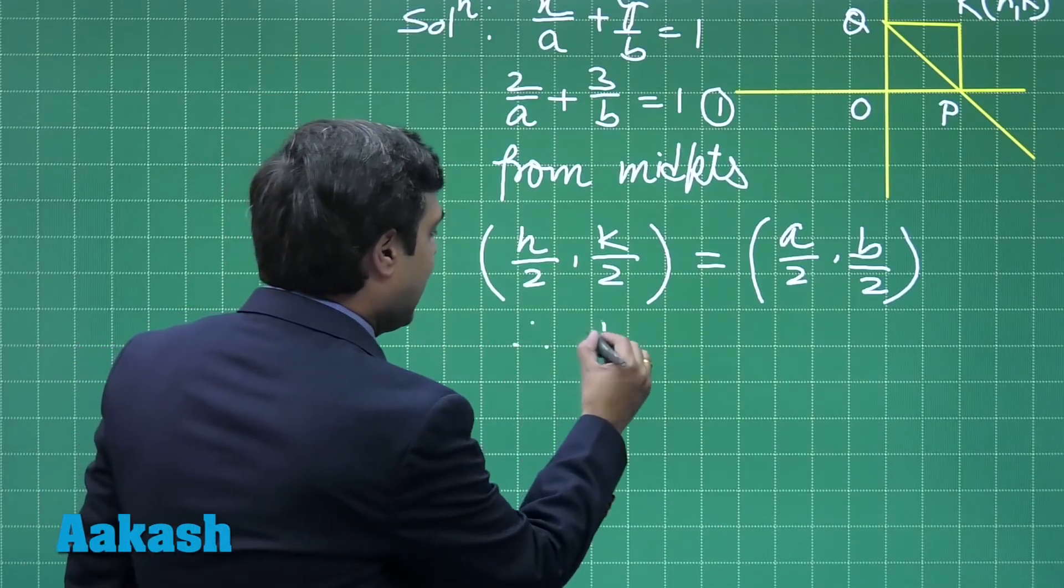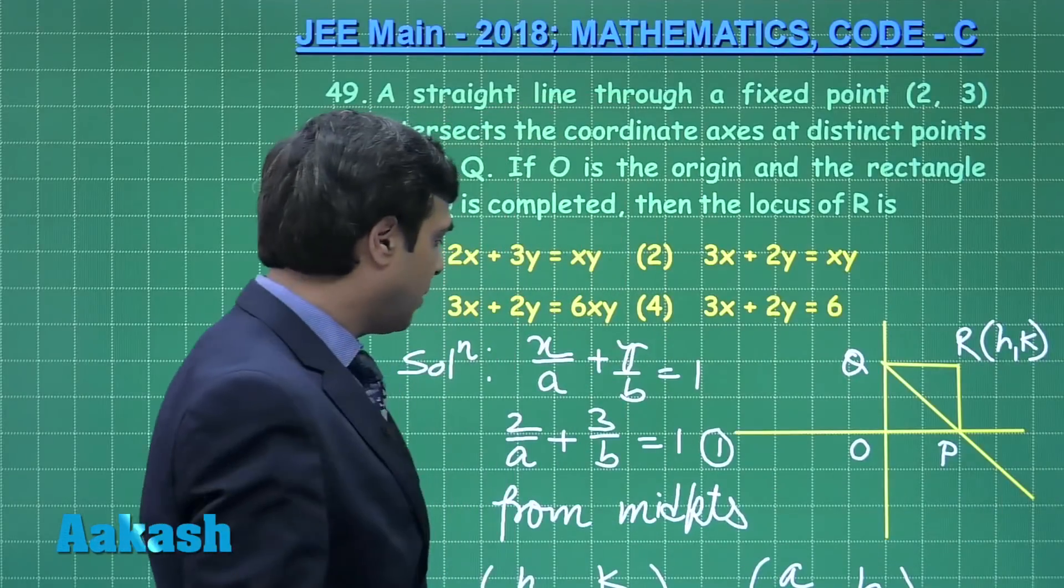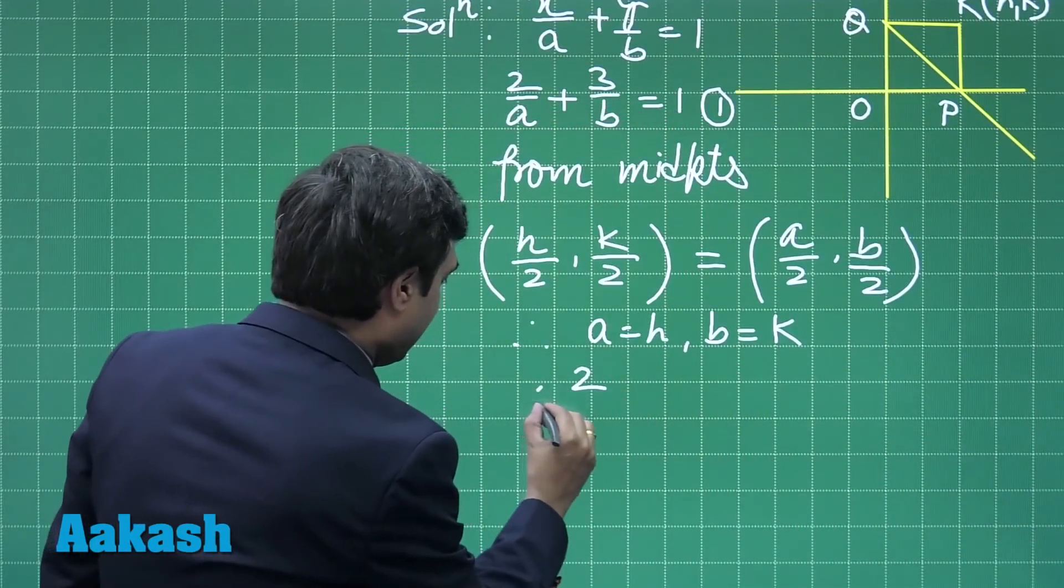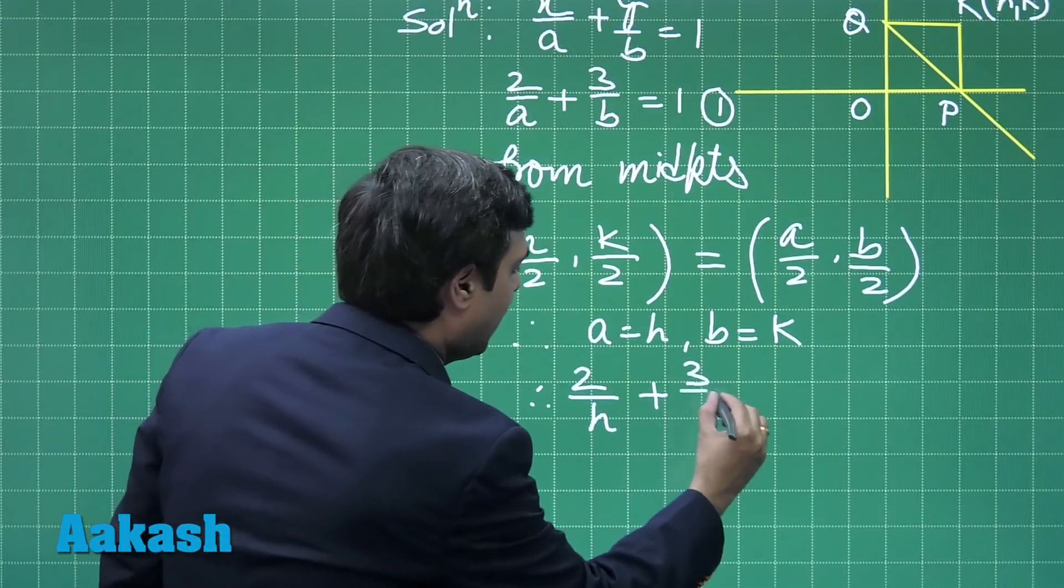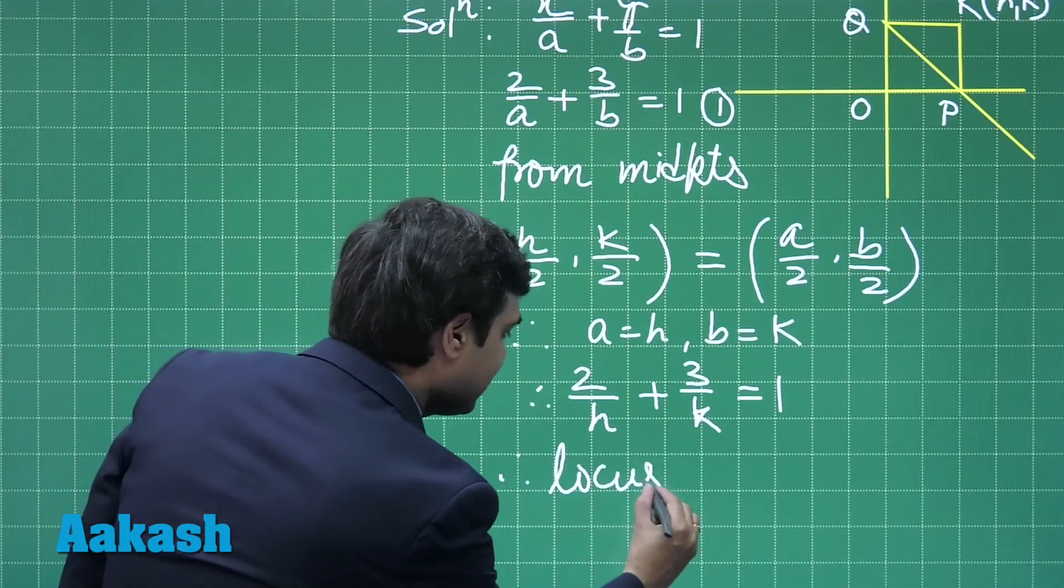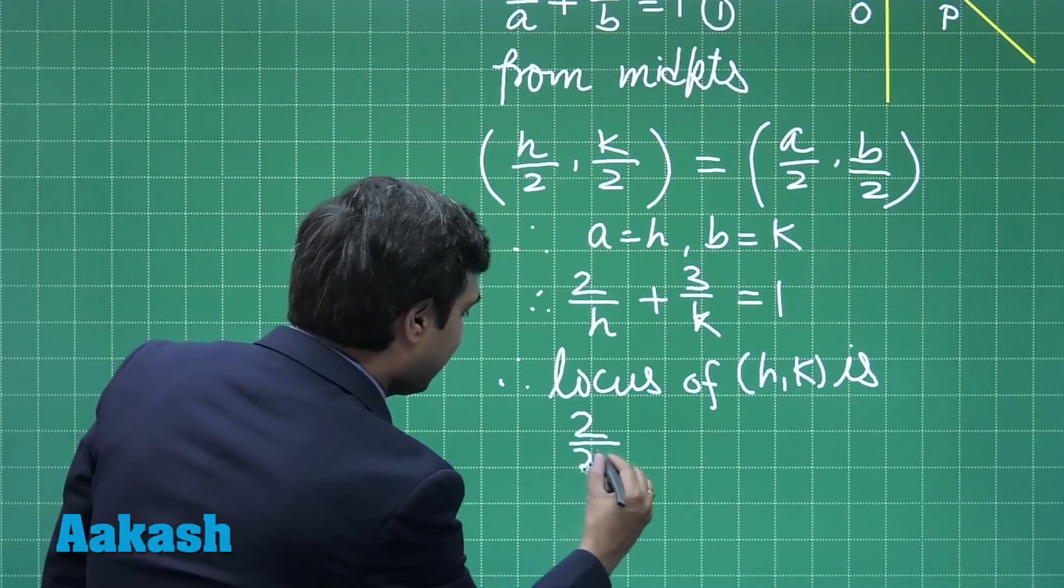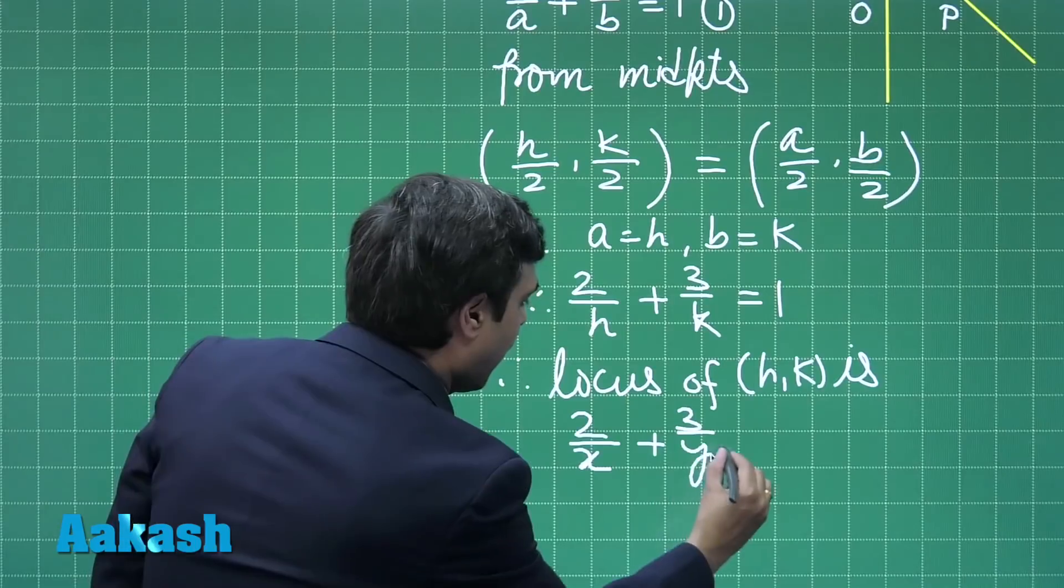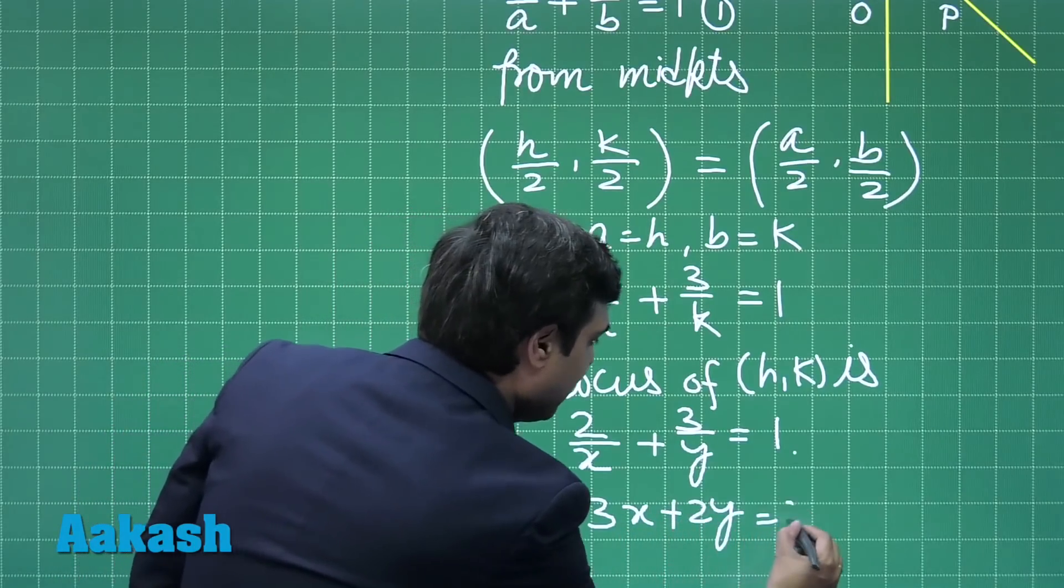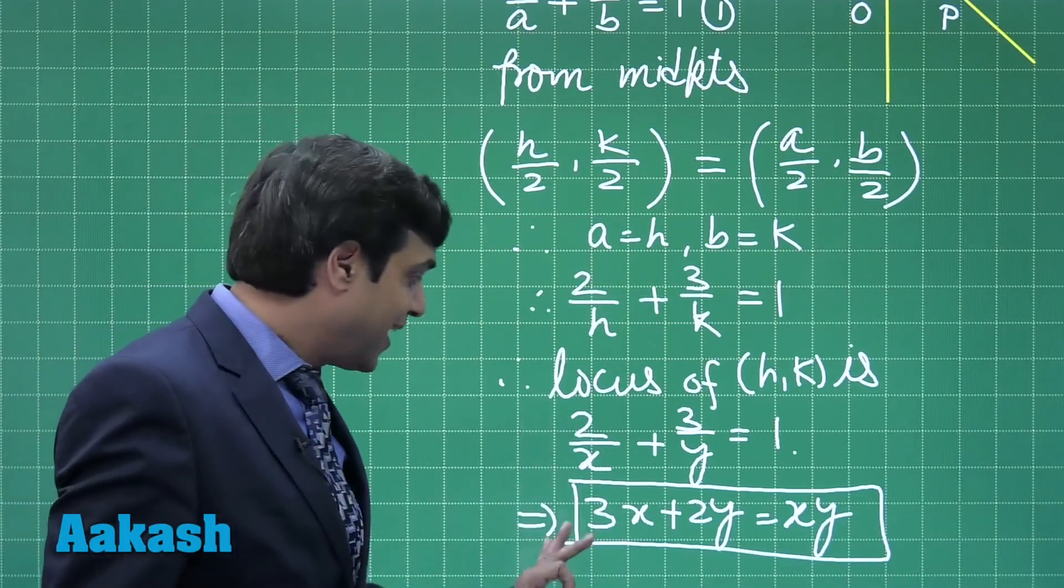Therefore, a = h, b = k. Now put this a and b as h, k in equation number 1, that is 2/a + 3/b = 1. Substituting here, we get 2/h + 3/k = 1. Therefore, the locus of (h, k) is simply 2/x + 3/y = 1. Take LCM and simplify to get 3x + 2y = xy. This is the required locus of point R: 3x + 2y = xy.